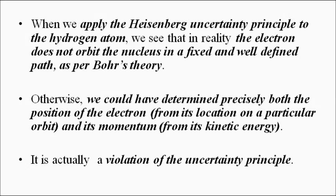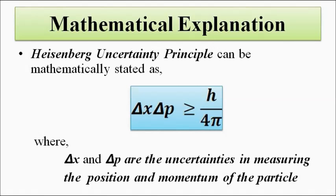If we apply the Heisenberg uncertainty principle to the hydrogen atom — which generally forms the basis of explanation in Bohr's theory and the de Broglie hypothesis — we find that the electron does not orbit around the nucleus in a fixed, well-defined path. Because we can never determine the exact position of the electron, Bohr's theory that electrons revolve in well-defined circular orbits is not correct. If HUP is right, Bohr's theory is wrong.